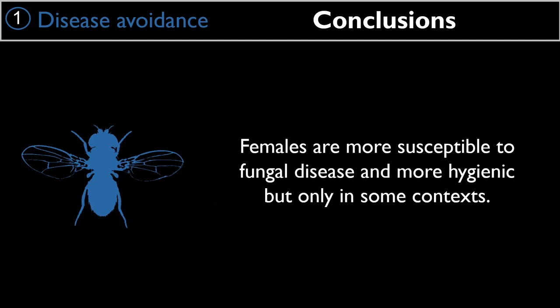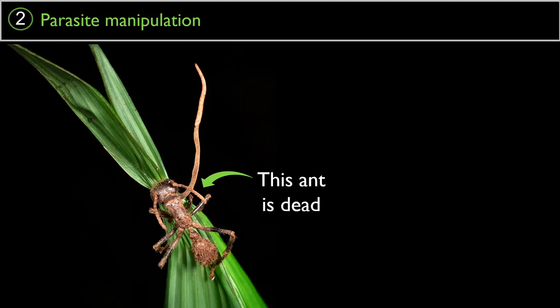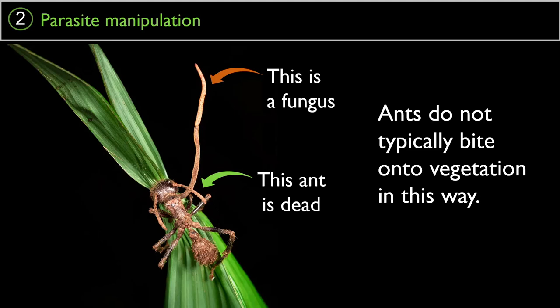Now we switch direction: instead of asking how behavior influences infection risk, we ask how parasites influence the behavior of animals. One of the most extreme examples is called parasite manipulation. Walking through many places in the world, you might see a dead ant biting onto a blade of grass with a fungus growing out of its head — behavior that ants don't typically perform.